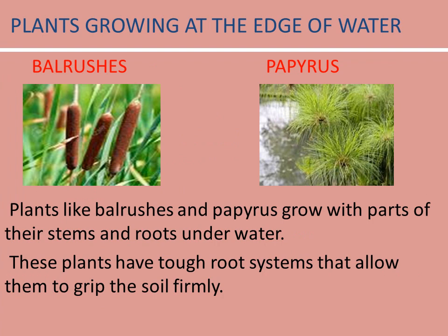Plants growing at the edge of water: plants like bulrushes and papyrus grow with parts of their stems and roots under water. These plants have tough root systems that allow them to grip the soil firmly.